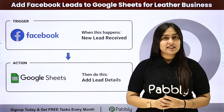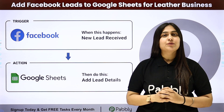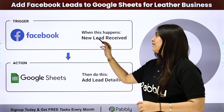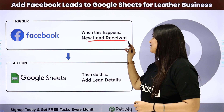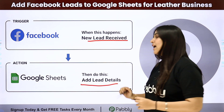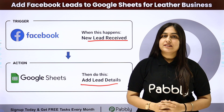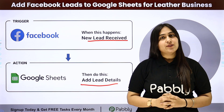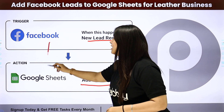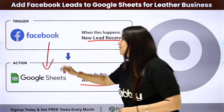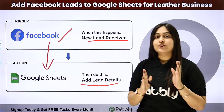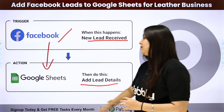I am an owner of a leather business and to promote my business, I am running a Facebook ad. Whenever a new lead is received, I want the details of that lead to automatically be added in my Google Sheet as a new row. To automate this process, we will use an automation software named Pably Connect, in which our trigger application will be Facebook Lead Ads and our action application will be Google Sheet.